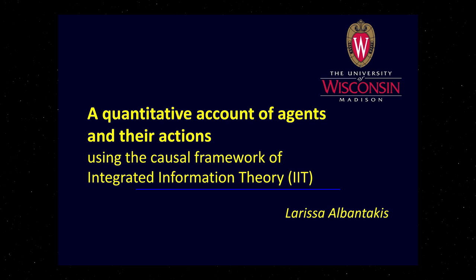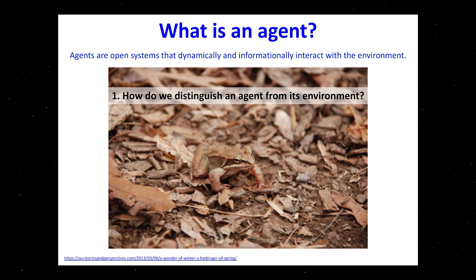I want to start with the obvious question: what is an agent? Not as a definition, but just as a trivial statement — agents are open systems that dynamically and informationally interact with the environment. That should be trivially true, but it already raises at least two important questions. One is: how do we distinguish an agent from its environment? Biology typically takes agents or organisms for granted, whereas physics has a hard time distinguishing entities within a larger dynamical system.